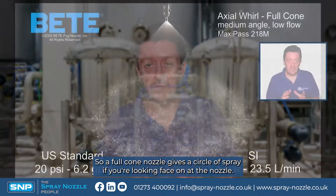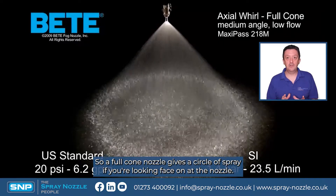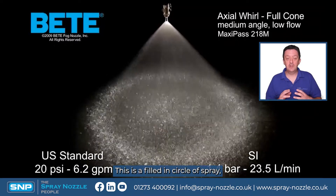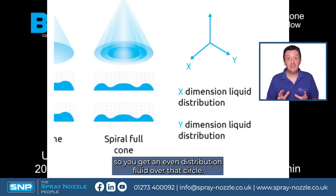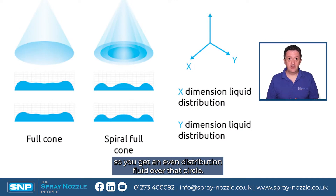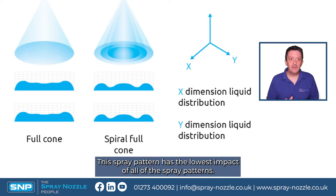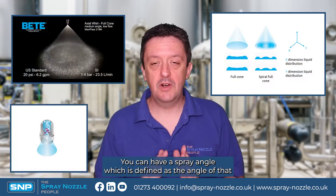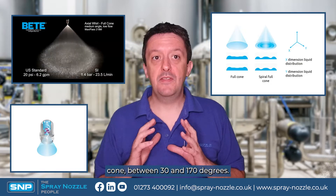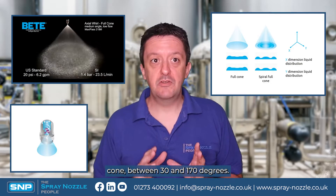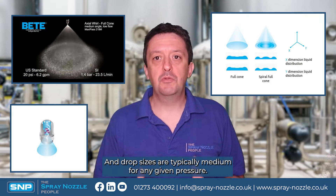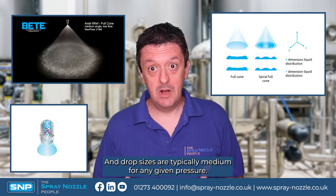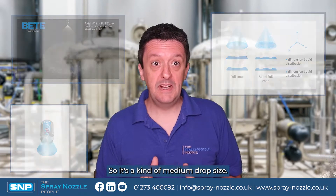A full cone nozzle gives a circle of spray if you're looking face-on at the nozzle. This is a filled-in circle of spray, so you get an even distribution of fluid over that circle. This spray pattern has the lowest impact of all the spray patterns, so it's a low impact spray pattern. You can have a spray angle between 30 to 170 degrees, and drop sizes are typically medium at given pressures.